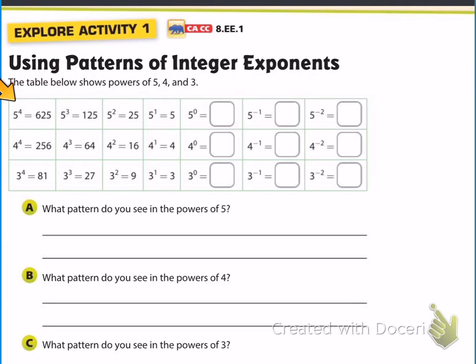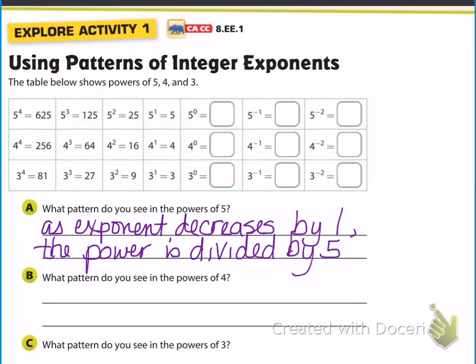Okay, so hopefully you have noticed that as we move from left to right across this table, the exponent is decreasing by 1 each time. 4 to 3 to 2 to 1, and then down to 0, and it continues to decrease by 1 as we go negative, all right? And as we look at the right side of these equations, 625 to 125 to 25 to 5, you might notice that as the exponent decreases by 1, the power is divided by 5, okay?